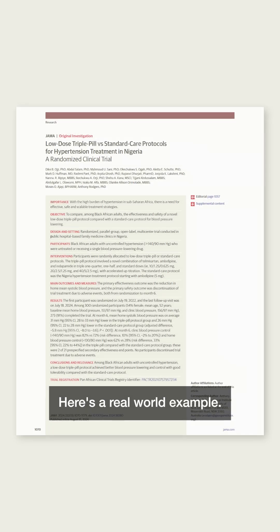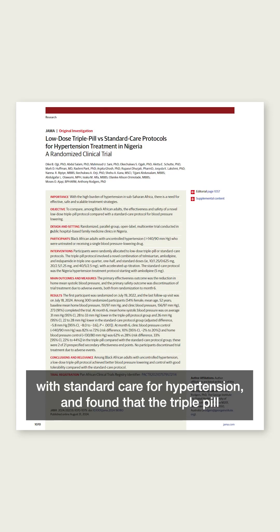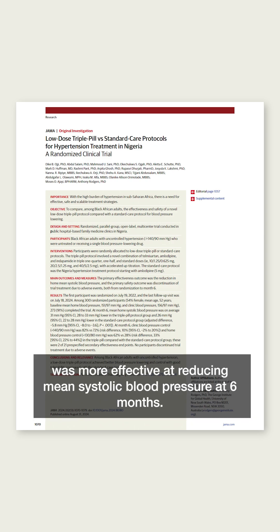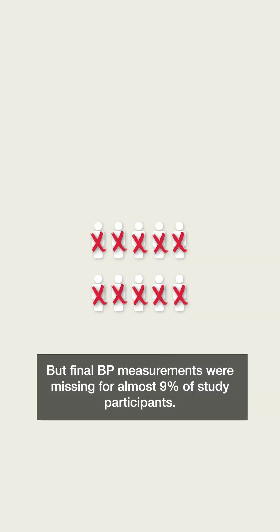Here's a real-world example. A recent trial from Nigeria compared a triple-pill protocol with standard care for hypertension, and found that the triple-pill was more effective at reducing mean systolic blood pressure at six months. But final BP measurements were missing for almost 9% of study participants.